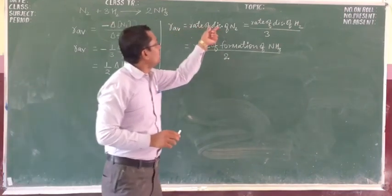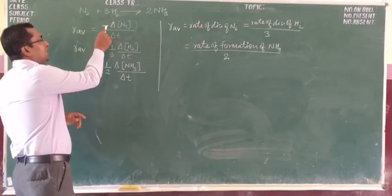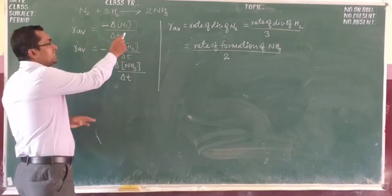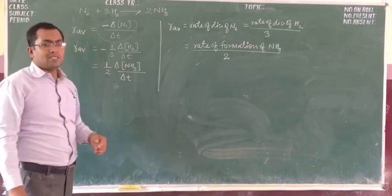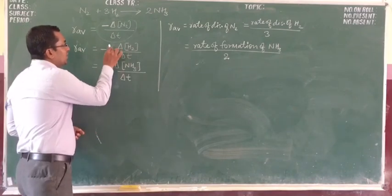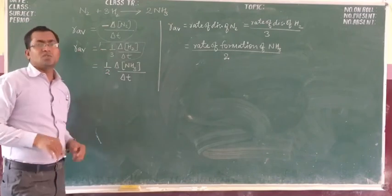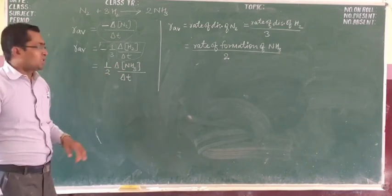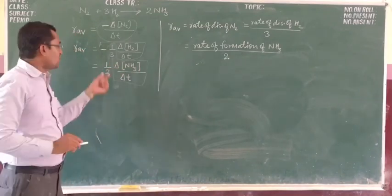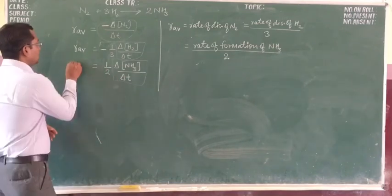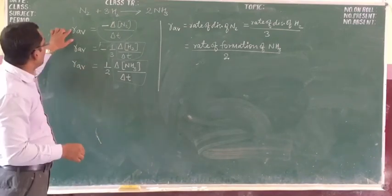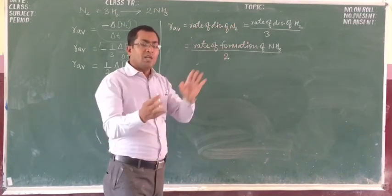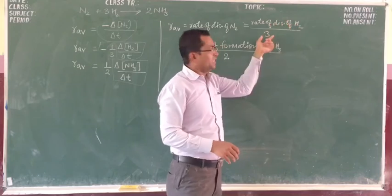So the rate of disappearance of nitrogen is equal to the average rate. If we express it in terms of hydrogen, we have to divide by 3. If we express it in terms of ammonia formation, we have to divide by 2. So the three formulas are equal: average rate equals rate of disappearance of nitrogen, which also equals rate of disappearance of hydrogen divided by 3, or half of the rate of formation of ammonia.